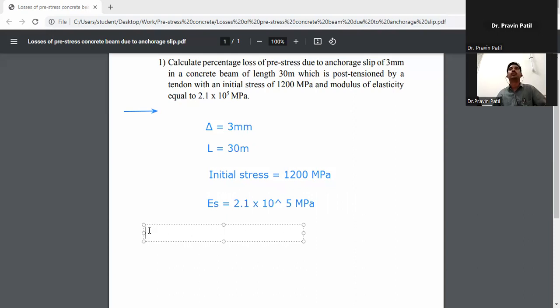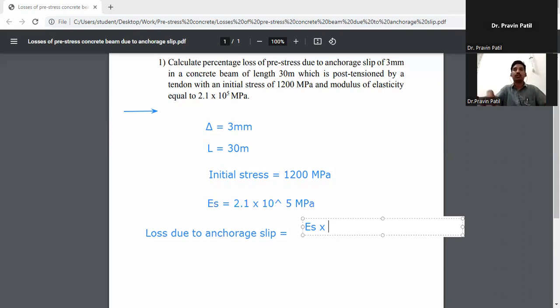Loss due to anchorage slip is equal to Es times delta divided by L.